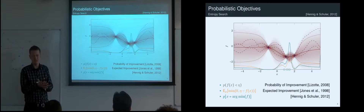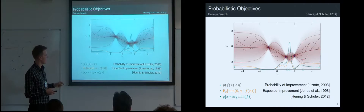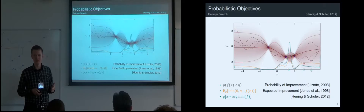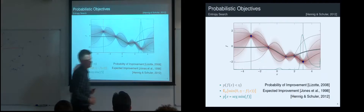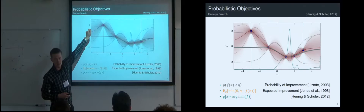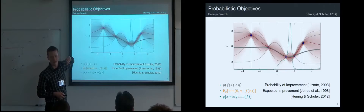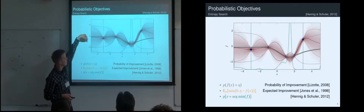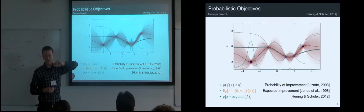A naive thing would be to just evaluate at the maximum of this distribution, but that doesn't do what we actually want. We're not trying to just evaluate at the minimum — we're trying to learn what the minimum actually is, to shape this distribution so it becomes informative about where the minimum is. We have to reason about what happens to this green distribution if we evaluate at some point. The control engineers figured this out long before us; they call it the innovation process — a term from around the 1960s.